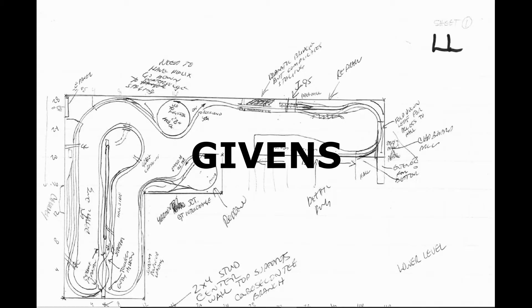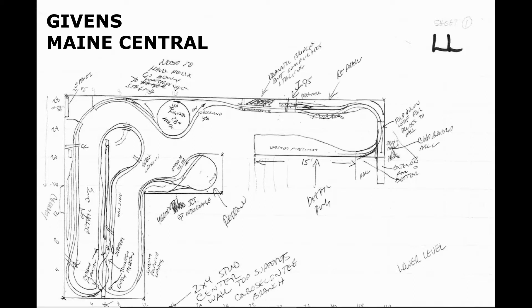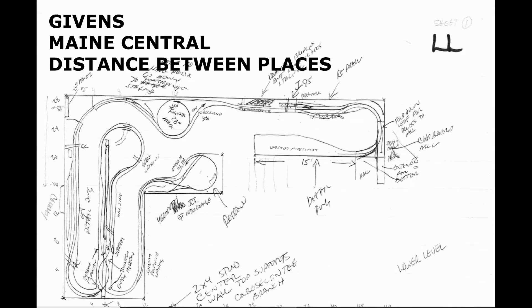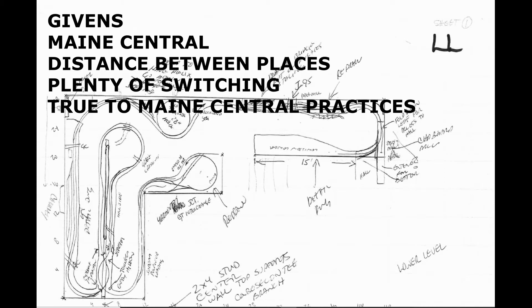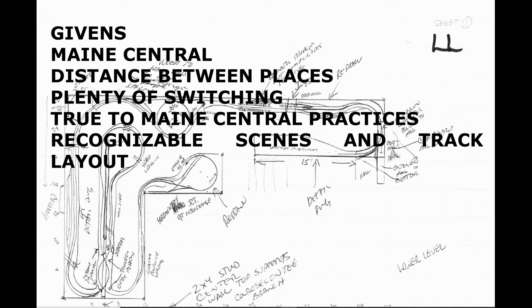First, our givens. The railroad would be the Maine Central. I wanted there to be distance between the places. I wanted there to be plenty of switching. I wanted the railroad to be true to Maine Central practices. I wanted the track layouts and scenes to be recognizable.